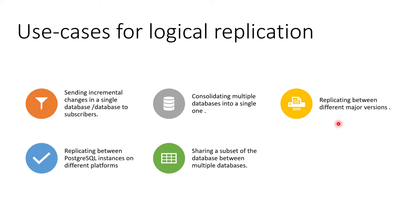There may be a data warehouse scenario where consolidation from multiple databases goes into a single database. We can replicate changes between different major versions, or replicate from a PostgreSQL instance running on Linux to one on Windows. There may also be a case where we can share a subset of a database — for example, a table existing in database A can be sent to databases B, C, D, and E, not the entire database content, just selected tables.